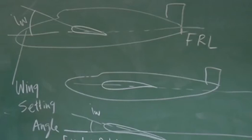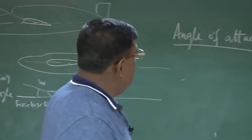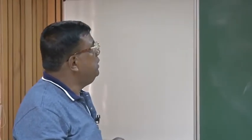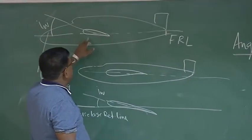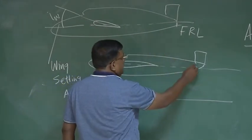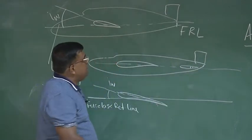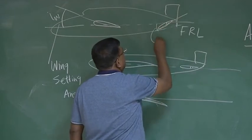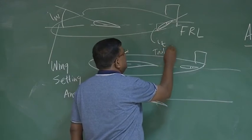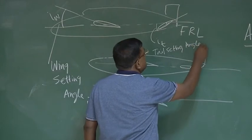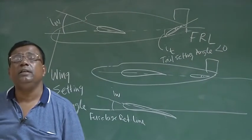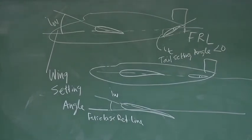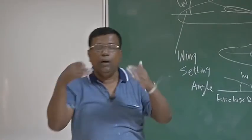Depending on the situation you can give some setting angle or you may not. There are much other issues which have to be handled. You should now start building a thought process in your mind — not necessarily will the wing always be flat. The wing will be set at a setting angle. Similarly, we will see soon that the tail — in almost all aircraft — is not set flat. The tail is actually set at a tail setting angle, which I call it, and which is negative: minus 2 degrees, minus 3 degrees. You will understand why this is required.